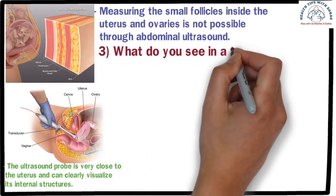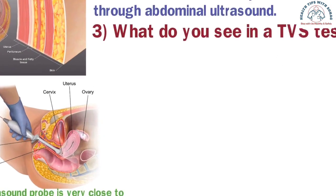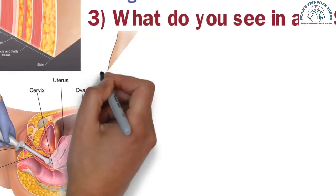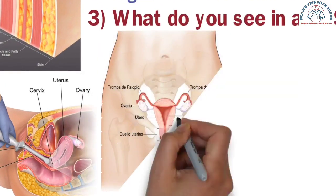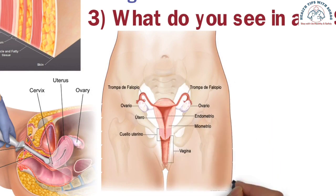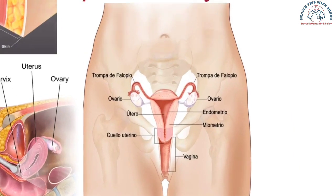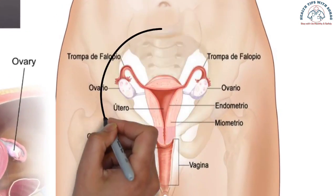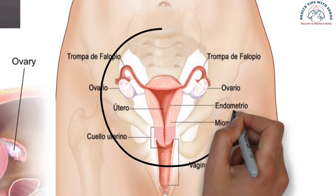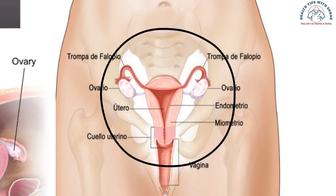Now let's discuss what you see in a TVS test. During a TVS or trans-vaginal ultrasound test, the uterus, ovaries, fallopian tubes, urinary bladder, and cervix — cervix means the opening of the uterus — and other reproductive organs of women are examined. In other words, the reproductive organs of women are visualized.